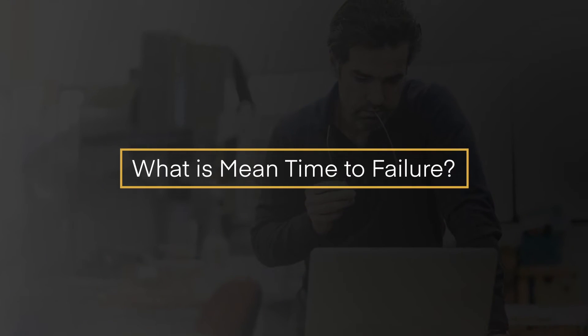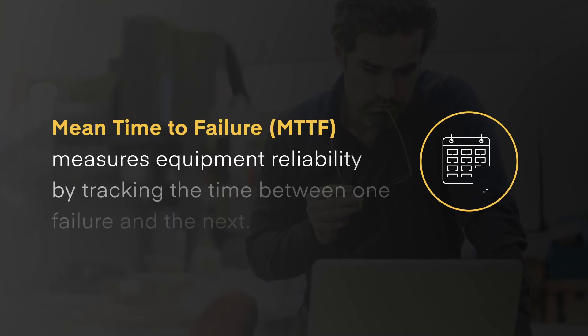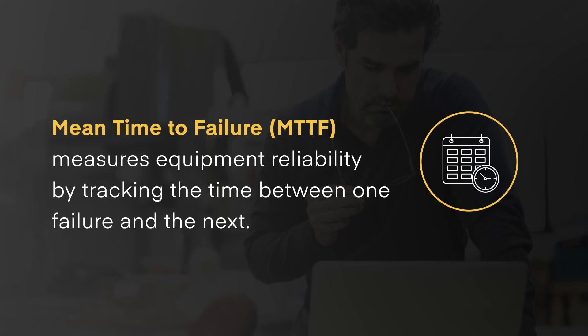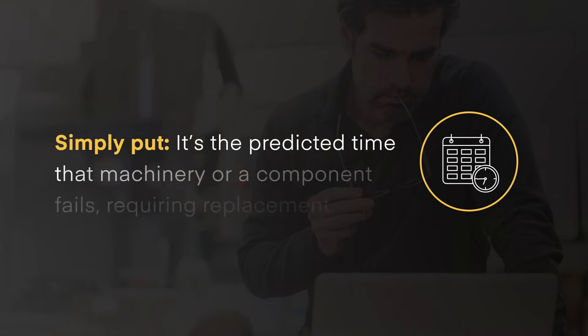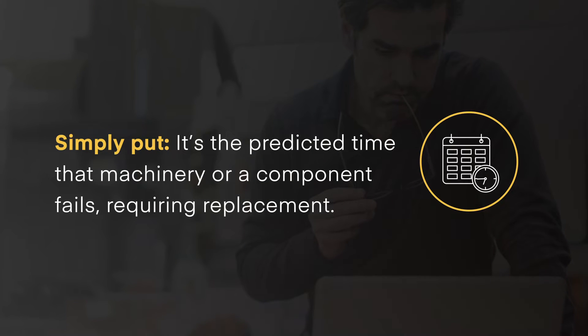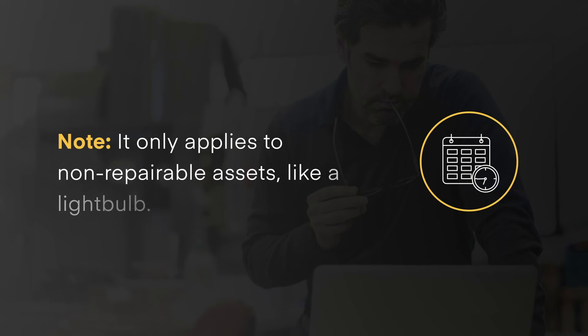What is mean time to failure? Mean time to failure, or MTTF, measures equipment reliability by tracking the time between one failure and the next. Simply put, it's the predicted time that a machine or component fails, requiring replacement. Note: it only applies to non-repairable assets, like a lightbulb.